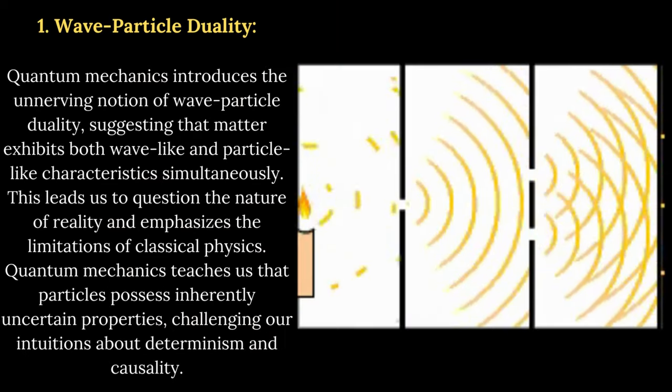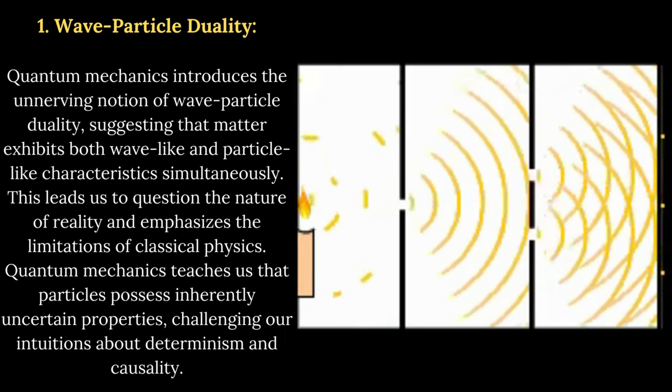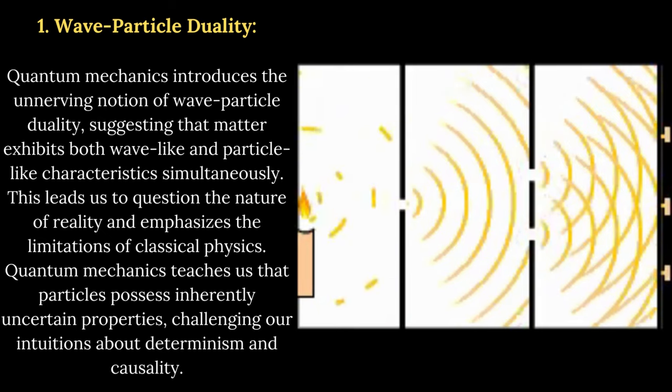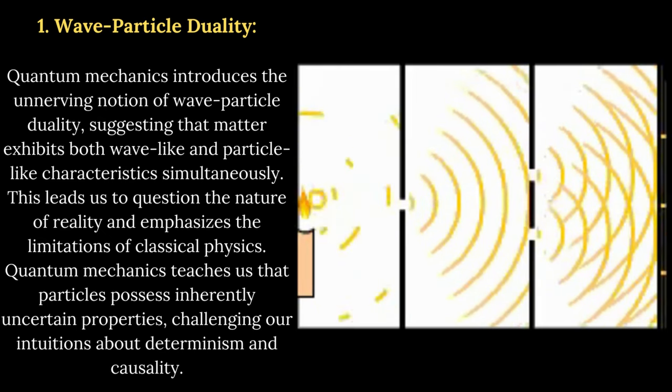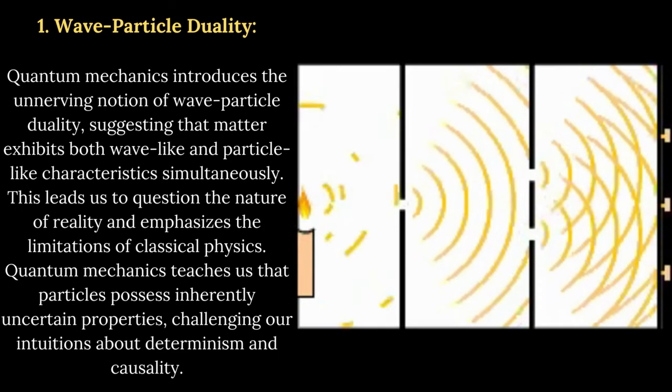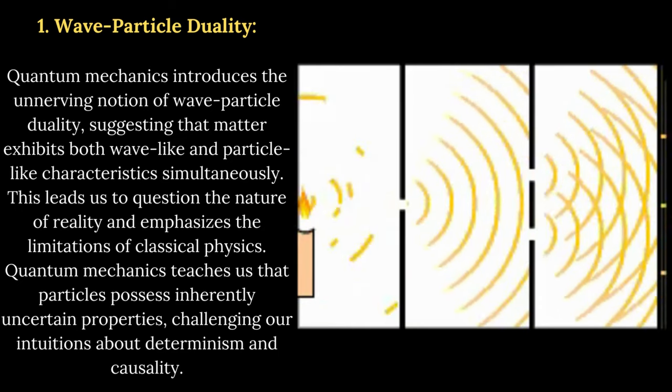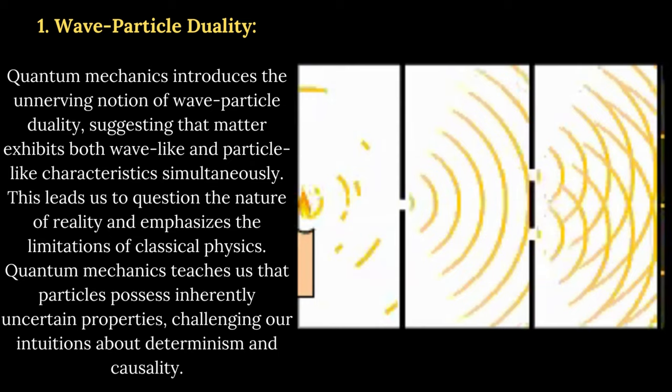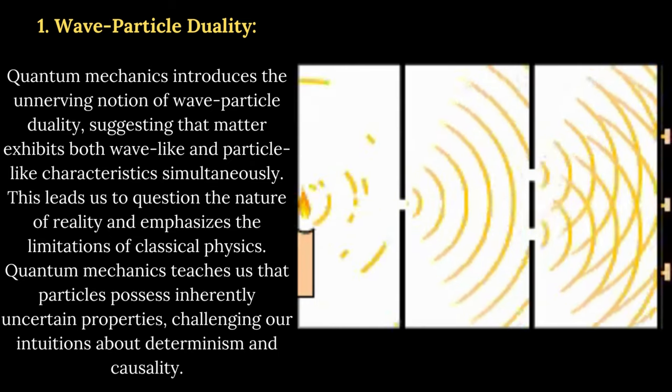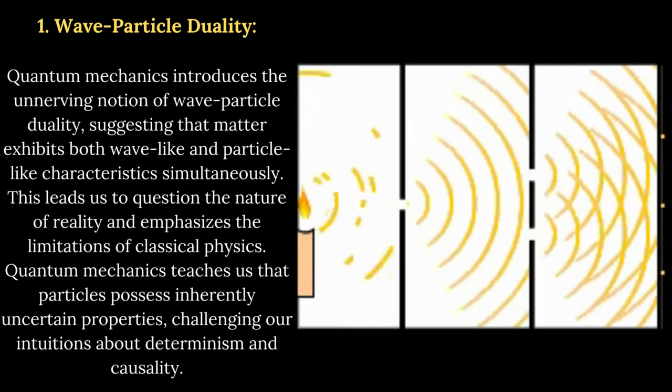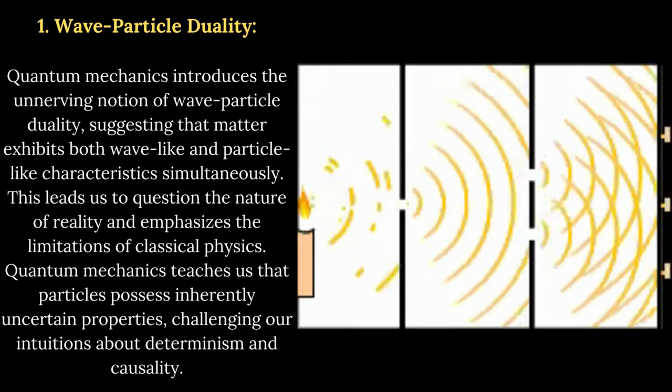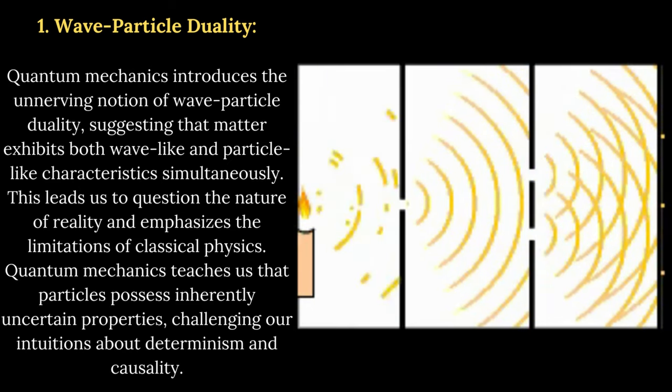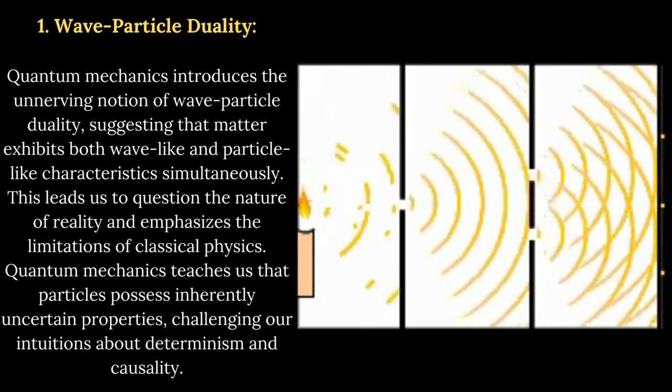Wave-particle duality. Quantum mechanics introduces the unnerving notion of wave-particle duality, suggesting that matter exhibits both wave-like and particle-like characteristics simultaneously. This leads us to question the nature of reality and emphasizes the limitations of classical physics. Quantum mechanics teaches us that particles possess inherently uncertain properties, challenging our intuitions about determinism and causality.